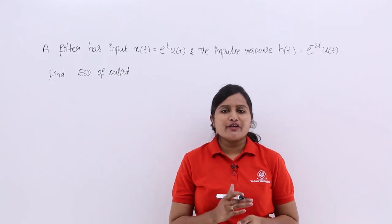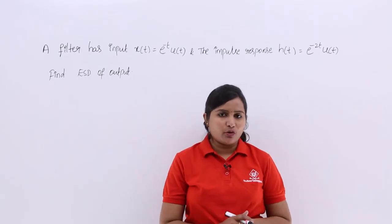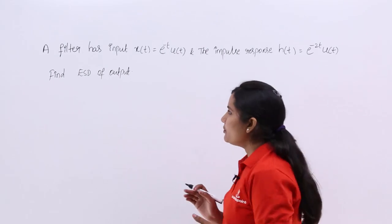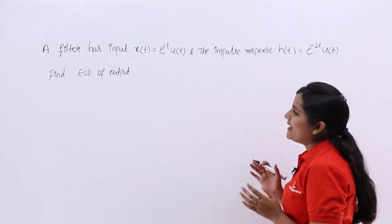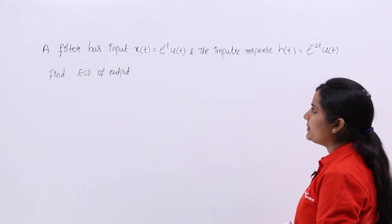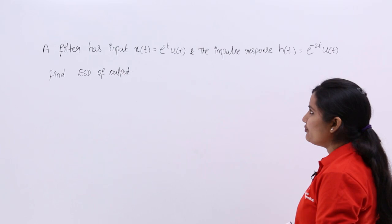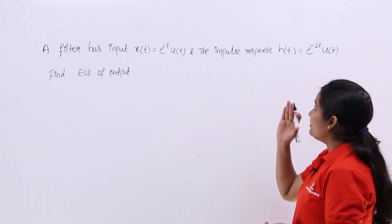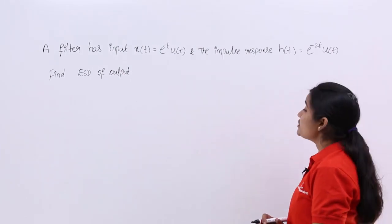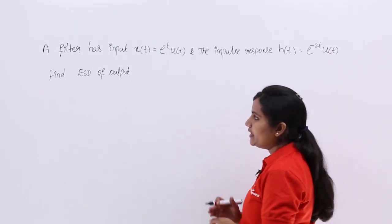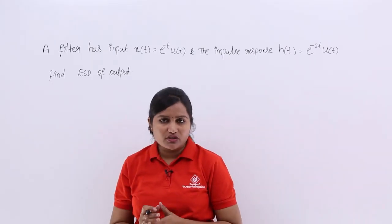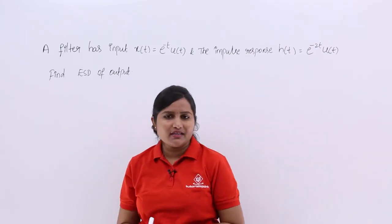In this video we are going to discuss a problem related to spectral density. A filter has input x(t) = e^(-t)u(t) and impulse response h(t) = e^(-2t)u(t). Find the ESD, that means energy spectral density, of the output.